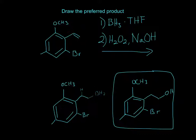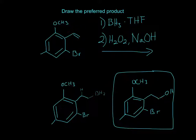Then H2O2 will cleave off the BH2, and then NaOH — the OH — will join right here. That's why you have OH right here, and the hydrogen is simply implied.